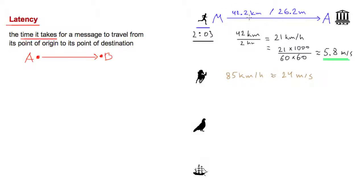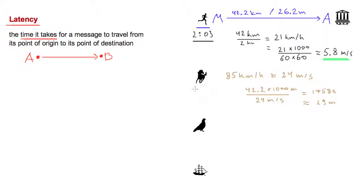We know the distance is 42.2 kilometers, and we know the speed is 24 meters per second. Converting 42.2 kilometers to meters gives 42,200 meters. Dividing by 24 meters per second works out to 1,758 seconds, which we can convert to minutes by dividing by 60. That works out to approximately 29 minutes. So the message latency for delivering the message by horse is more than four times faster, at approximately 29 minutes.